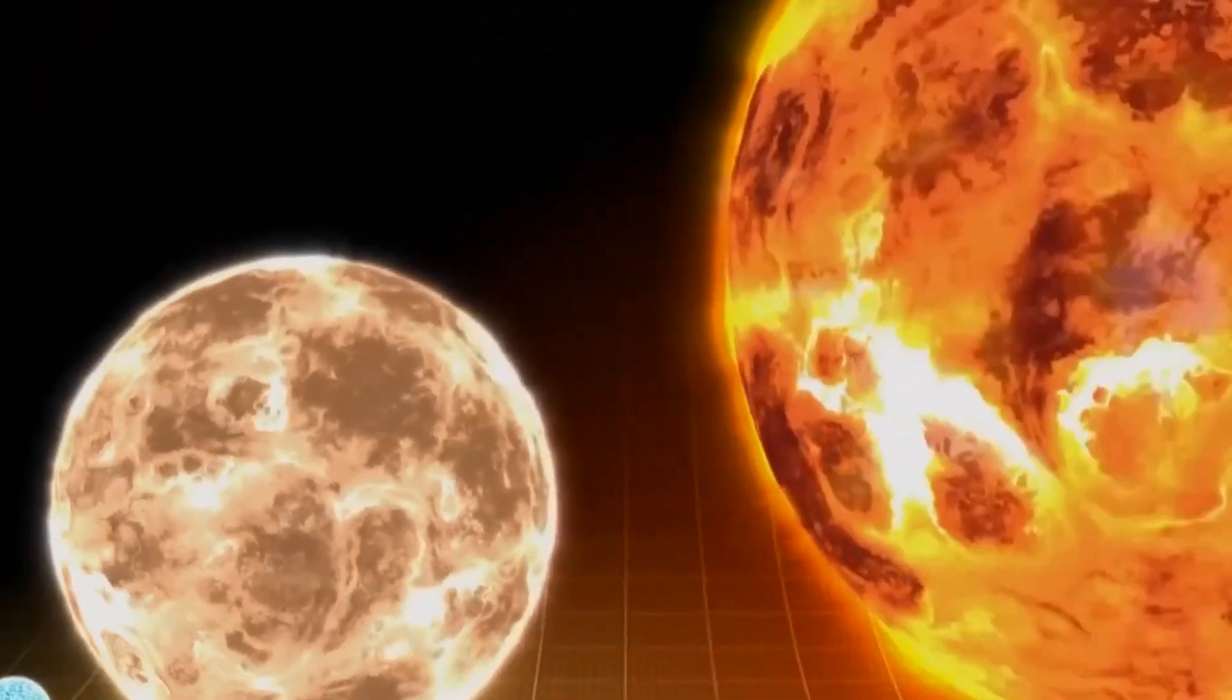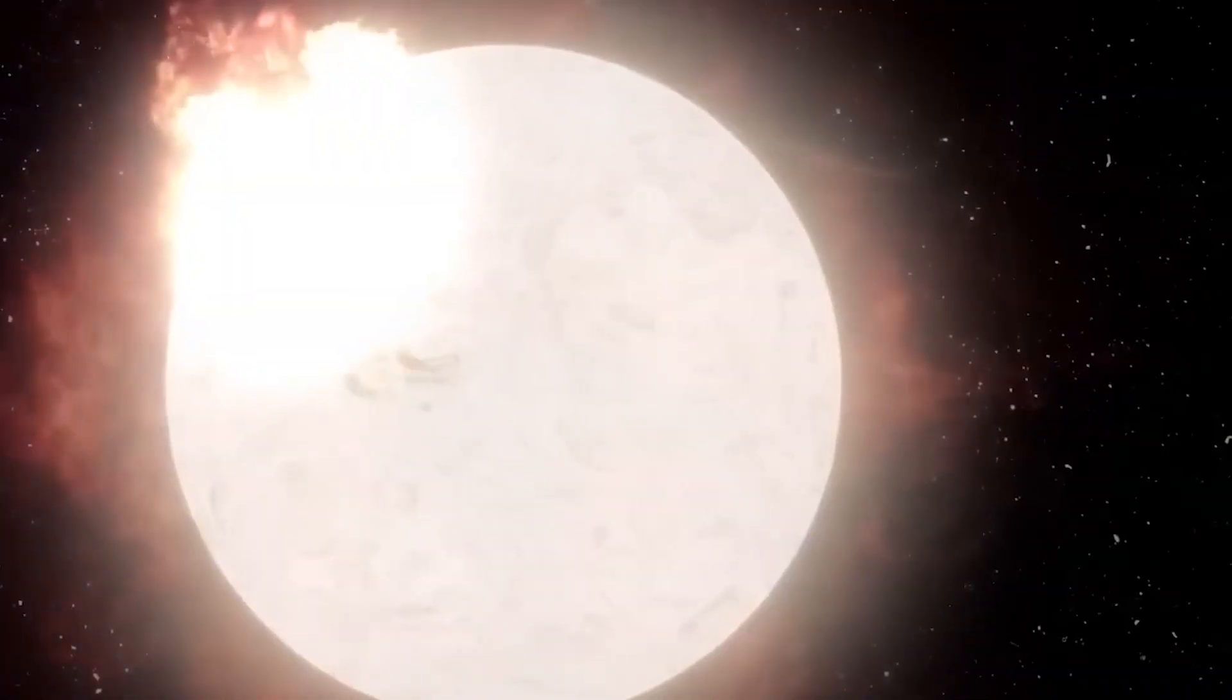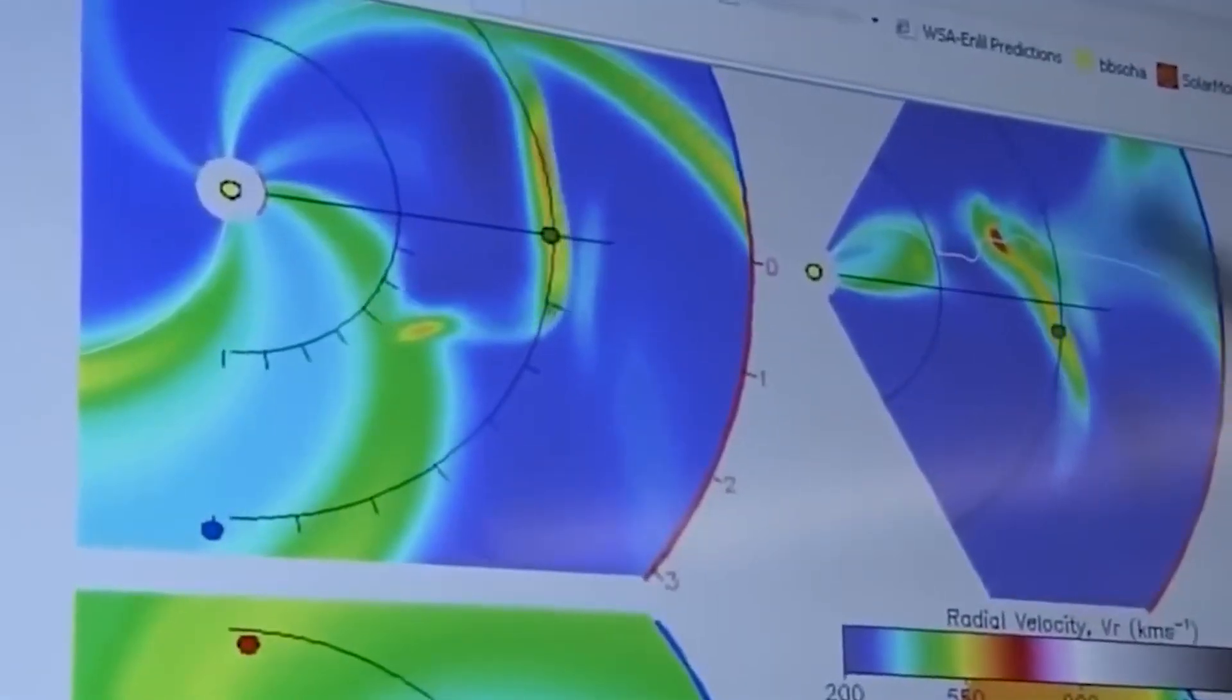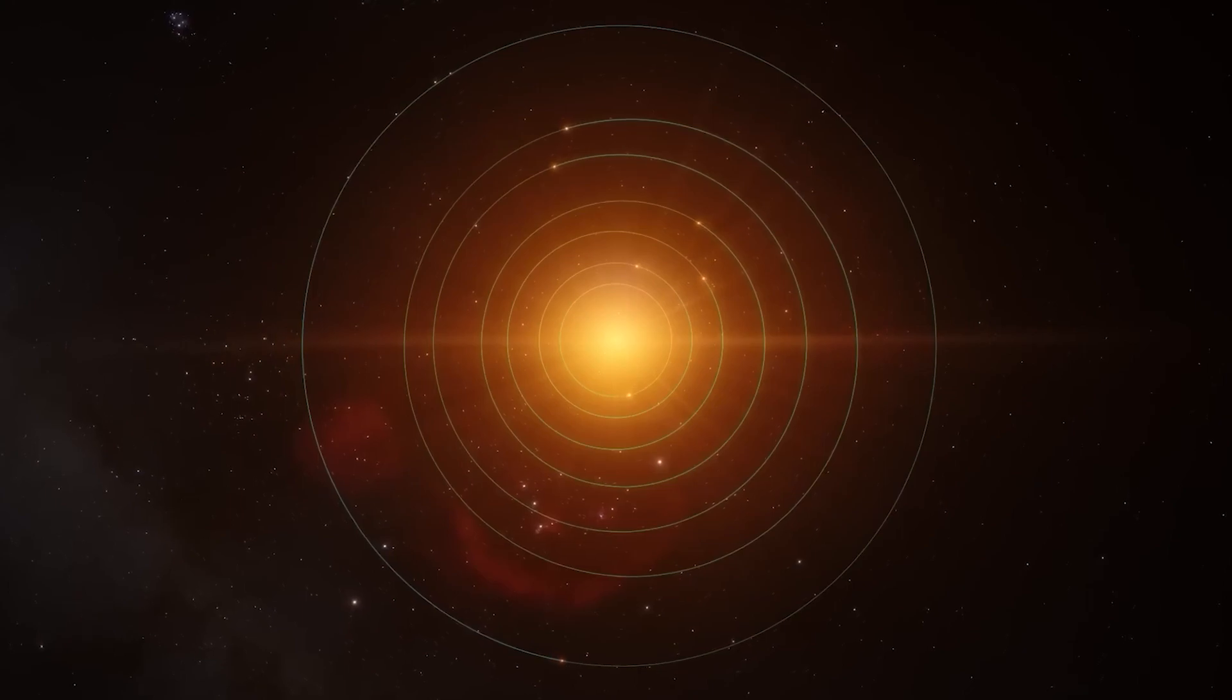As already discussed, when Betelgeuse goes supernova, it would produce an array of cosmic particles and radiation. One of the intriguing products of this event would be neutrinos.